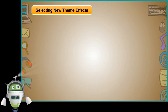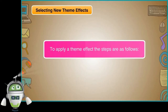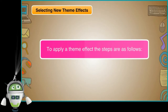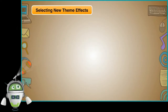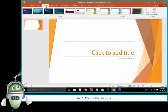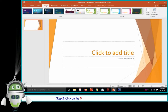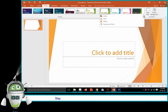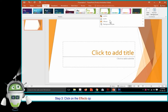Selecting New Theme Effects. To apply a theme effect, the steps are as follows. Step 1: Click on the Design tab. Step 2: Click on the More drop-down arrow in the Variance group. Step 3: Click on the Effects option.